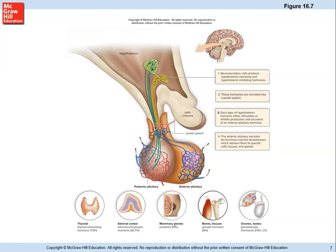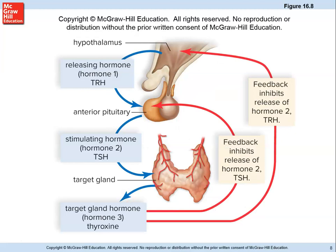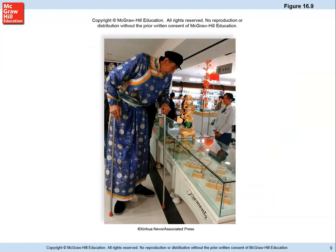The feedback interactions are complex: the hypothalamus tells the pituitary to do something, the pituitary tells the thyroid, the thyroid acts, then feeds back to the pituitary and hypothalamus, turning things off at higher levels. It's a trickle-down effect that also feeds back up the system. Some of these interactions aren't yet fully understood, which makes an endocrinologist's job that much trickier.